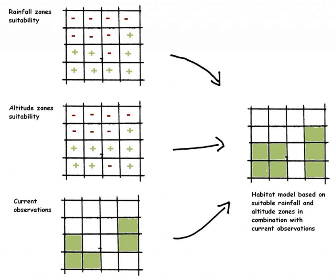Niche modeling algorithms include profile methods, simple statistical techniques that use environmental distance to known sites such as BIOCLIM and Domain, regression techniques such as forms of generalized linear models, and machine learning methods such as maximum entropy. Profile techniques include BIOCLIM, Domain, ecological niche factor analysis, and Mahalanobis distance.